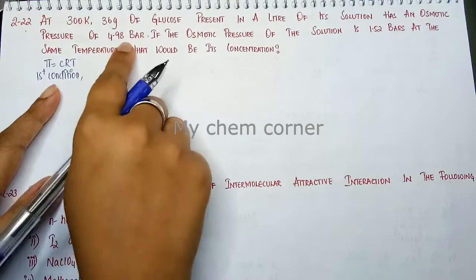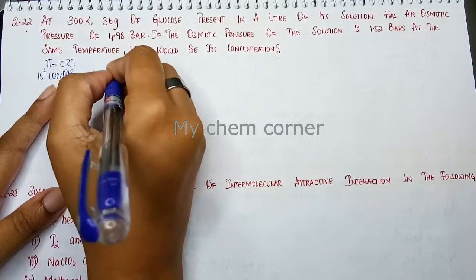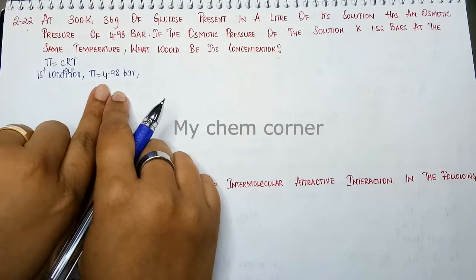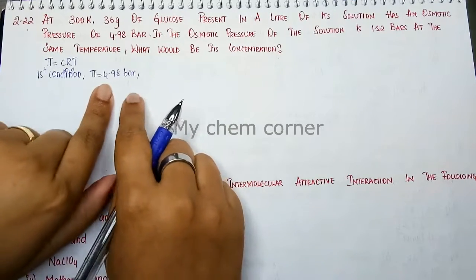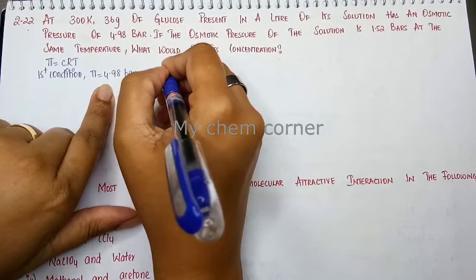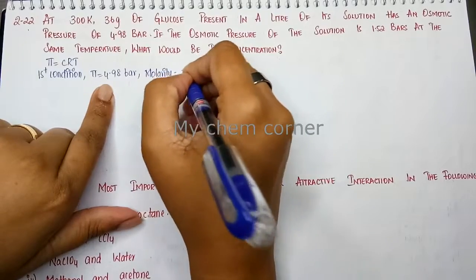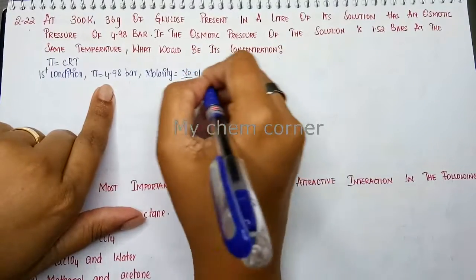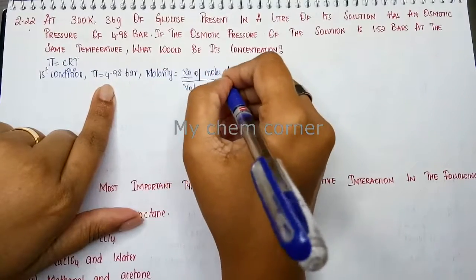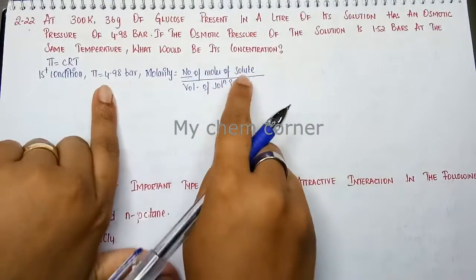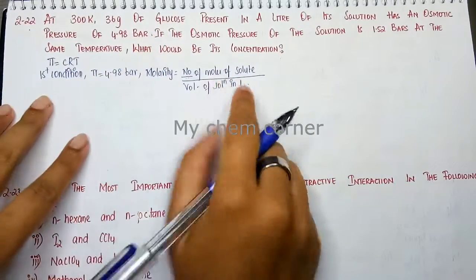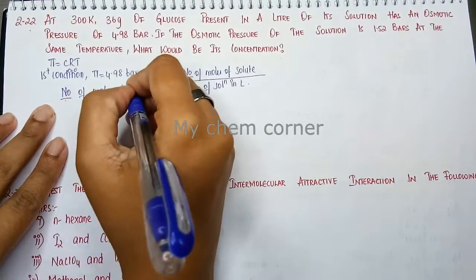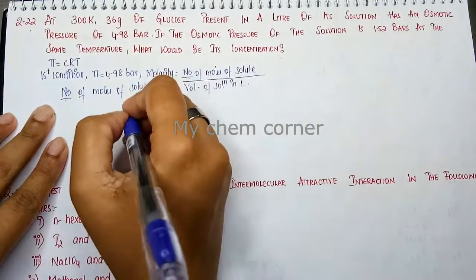For the first condition, the osmotic pressure is 4.98 bar. To find the molarity for 4.98 bar, we use the formula: molarity equals number of moles of solute divided by volume of solution in liters. The solute here is glucose. Number of moles of solute equals given mass divided by molar mass.